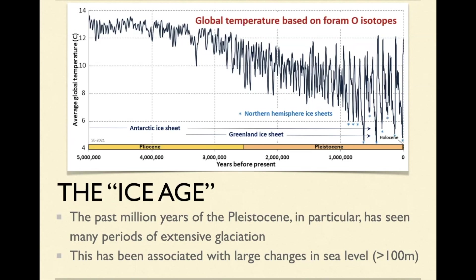So it goes up and down and up and down. The maximum was at this point here, and then the most recent was here. One of the things that happens during an ice age is when you create a lot of ice — hence the name — and pile it on land, sea level goes down. You're locking up that water and sticking it on land as thick ice, so sea level was very much lower than it is now.